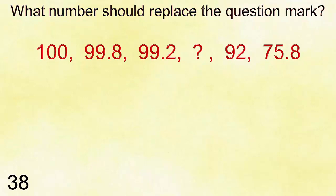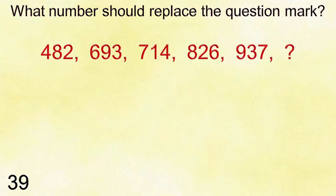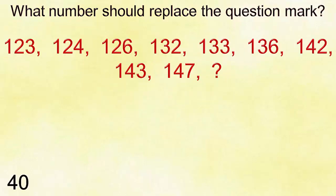Number thirty-seven: ten, ten, nine, seven, seven, four, four, three, one. Answer is six. Number thirty-eight: one hundred, ninety-nine point eight, ninety-nine point two, question mark, ninety-two, seventy-five point eight. Answer is ninety-seven point five.